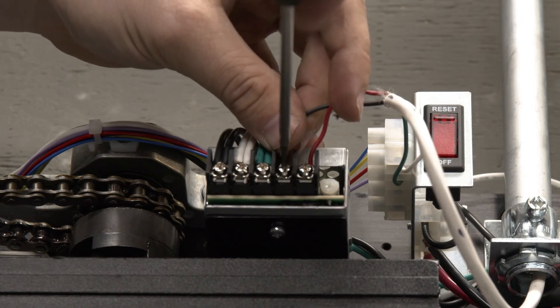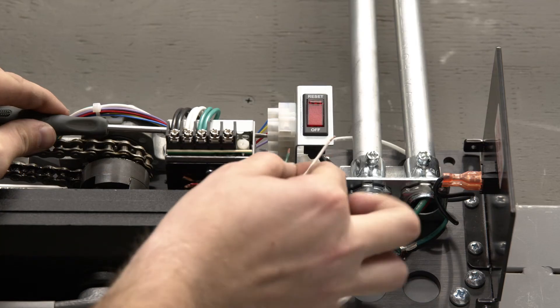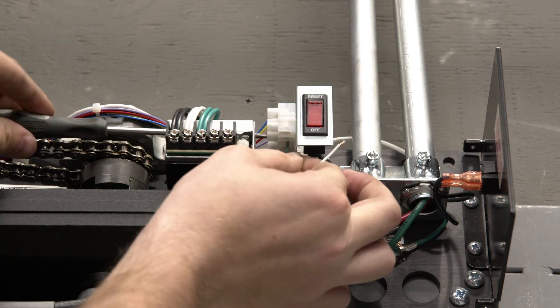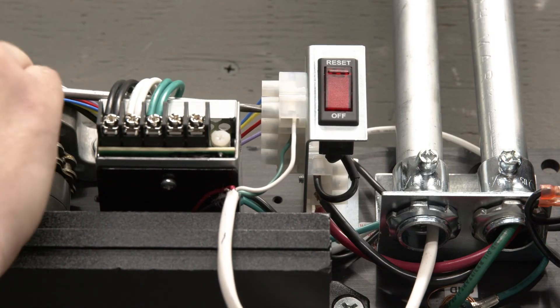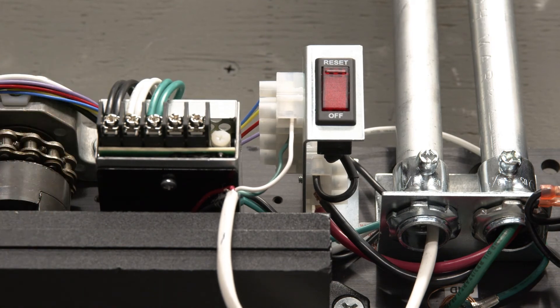Then connect your C or common wire, in this example we're using the green wire, to the 2 terminal. And connect your normally open wire, in this example we're using the white wire, to terminal 1.